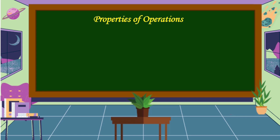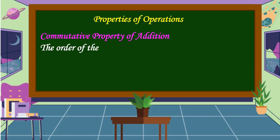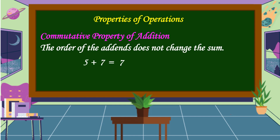The first property of operations is the commutative property of addition. This property states that the order of the addends does not change the sum. For example, 5 plus 7 is equal to 7 plus 5. Let's check: 5 plus 7 is equal to 12, and 7 plus 5 is equal to 12 also.